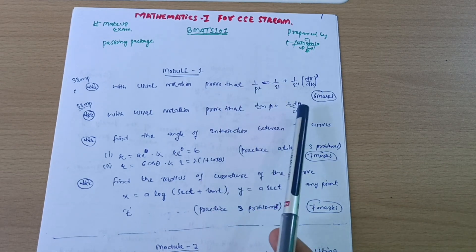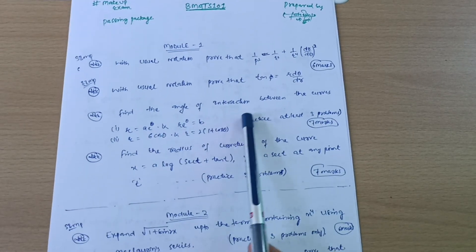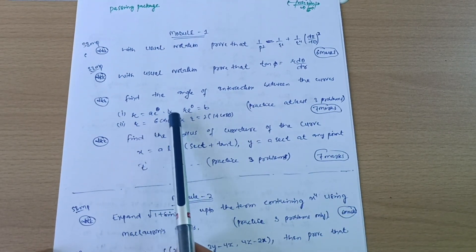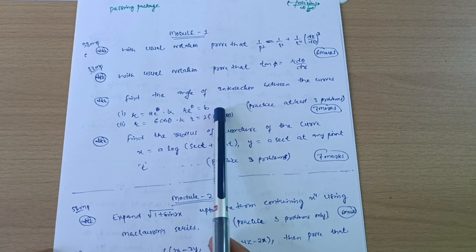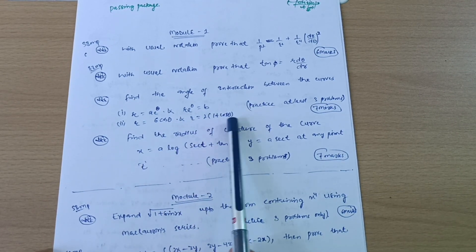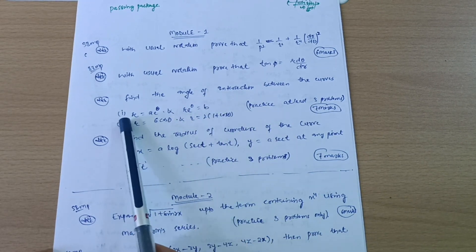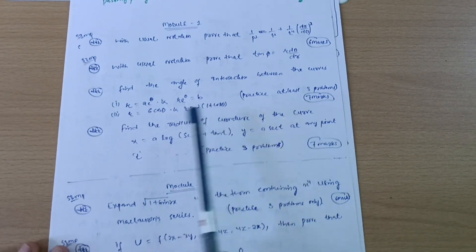Next is find the angle of intersection between the curves, that is r is equal to ae to the theta and r e to the theta is equal to b, r is equal to 6 cos theta and r is equal to 2 times 1 plus cos of theta. You should practice at least three problems on this particular concept, these two and another one. This is seven marks question.